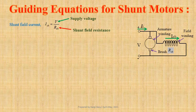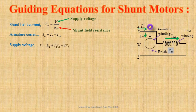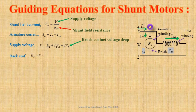Applying Kirchhoff's current law at node A, we get the expression for armature current: IA equals IL minus ISH, where IL is the line current taken from the DC source. Supply voltage V equals EB plus IA times RA plus 2VB, where RA is the armature resistance and VB is the brush contact voltage drop. From this expression we get back EMF: EB equals V minus IA times RA minus 2VB.